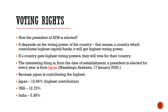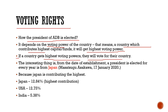What are the voting rights? How is the President of ADB elected? It depends on the voting power of a country — the country which contributes the highest capital gets the highest voting power, and they vote for their country's representative. The interesting thing is that from the date of establishment, the President elected every year has been from Japan, because Japan contributes the highest capital. As of 17th January 2020, Masatsugu Asawaka is the President of the Asian Development Bank.